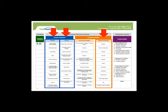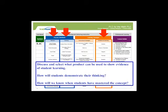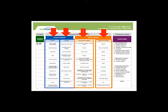Look at the Evidence of Learning column. Discuss and select an appropriate product that can be used to show evidence of student learning, matching the rigor of our Hotspot TEKS. Questions to consider: How will students demonstrate their thinking? How will we know when students have mastered the concept? Once you have selected an end product or evidence of learning, you will use high-yield instructional strategies to support student learning. We will demonstrate kinesthetic vocabulary and tips, highlighting the use of engaging vocabulary strategies. The next slides will provide videos demonstrating kinesthetic vocabulary and tips.